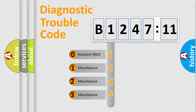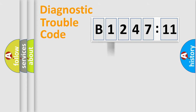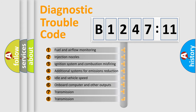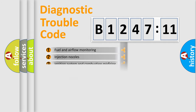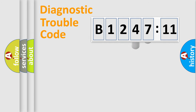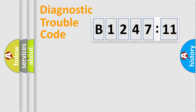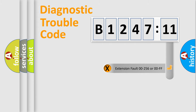This distribution is defined in the first character of the code. If the second character is expressed as zero, it is a standardized error. In the case of numbers 1, 2, or 3, it is a manufacturer-specific error. The third character specifies a subset of errors. This distribution is valid only for the standardized DTC code. Only the last two characters define the specific fault of the group.